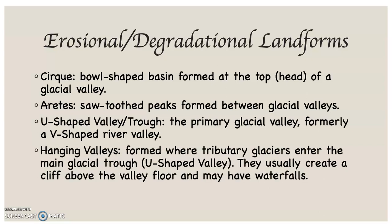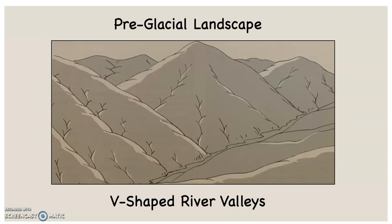Hanging valleys are formed where tributary glaciers enter the main glacial trough — in other words, the main U-shaped valley. They usually create a cliff above the valley floor, and in many cases they have waterfalls that go over the top of them.